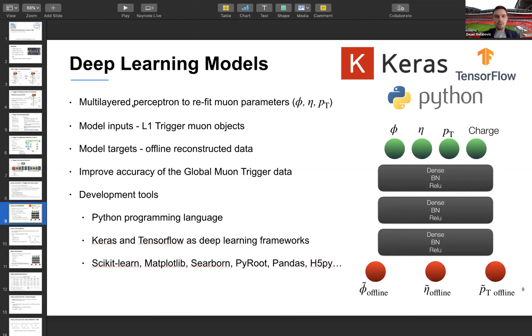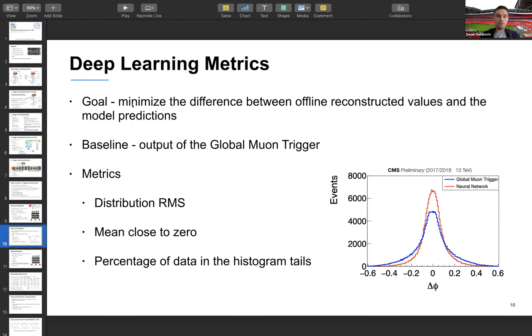The goal as in any artificial intelligence model is to minimize the difference between predictions and targets. In our case offline values and model predictions and we have our baseline which is the output of the global muon trigger. And we define some metrics how to analyze that. We are looking at the difference between GMT data and the offline reconstructed values and then the difference between neural network and the offline reconstructed values. We want to check the root mean square of that distribution. We want to be sure that it's close to zero and we are looking at the percentage of data in the histogram tails.